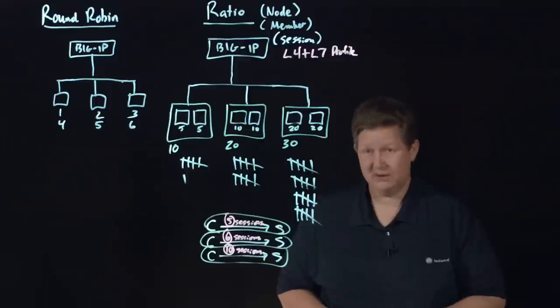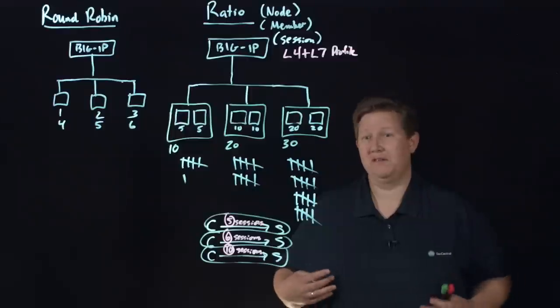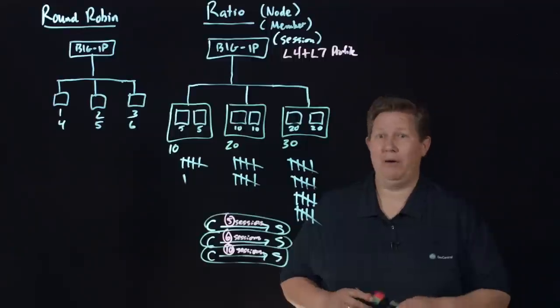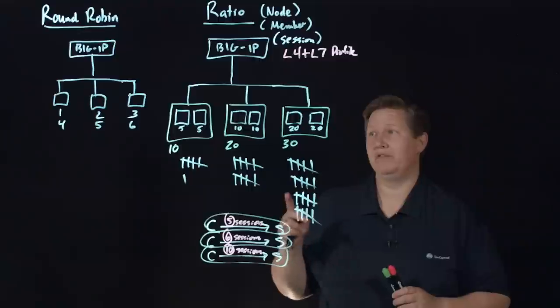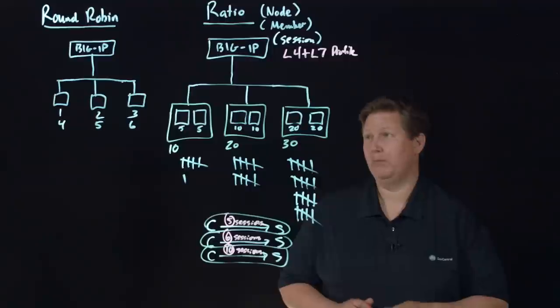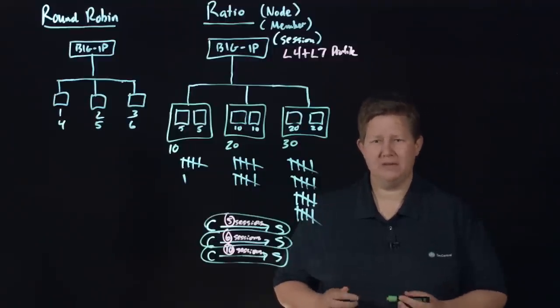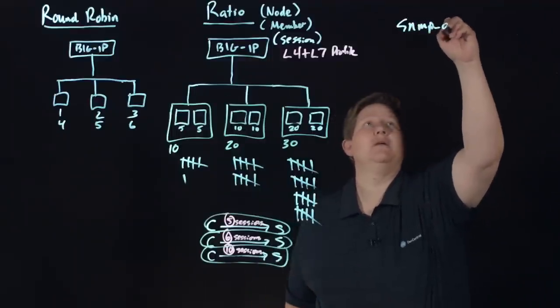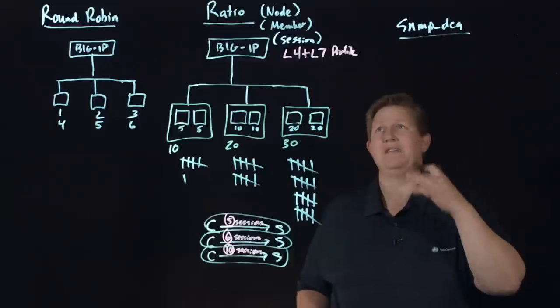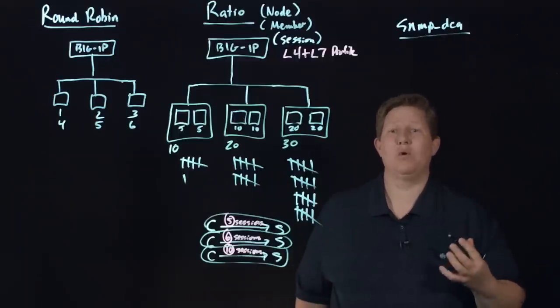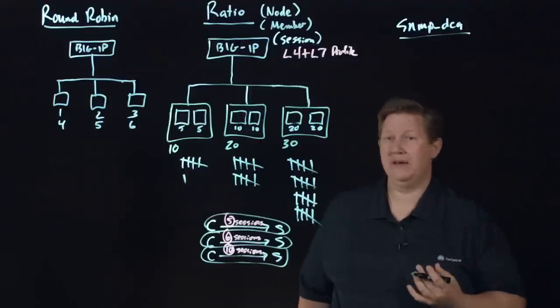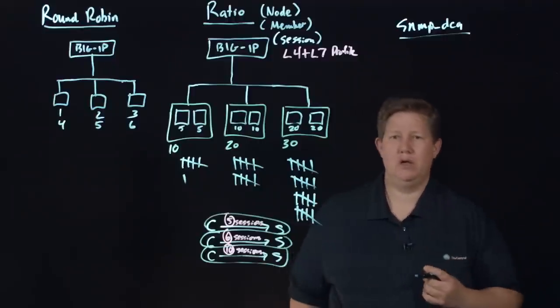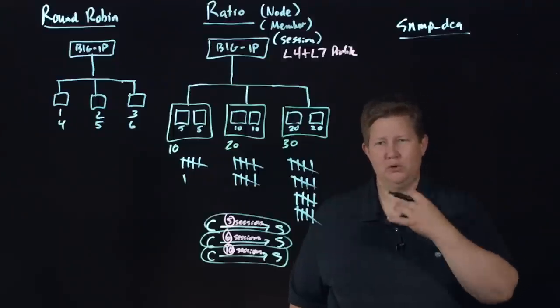Finally, let's talk about dynamic ratio. You can consider dynamic ratio the dynamic weighted round robin. The only difference between ratio and dynamic ratio is how it gets that ratio. With the static one you're configuring that on your pool members and nodes. With dynamic you're using a performance monitor to do that for you. So if you look at something like the SNMP DCA monitor, you would assign that to your pool, and then it's going to go out and pull that data from your servers. Based upon how your server returns that information, it's going to calculate the ratio for each of your pool members.